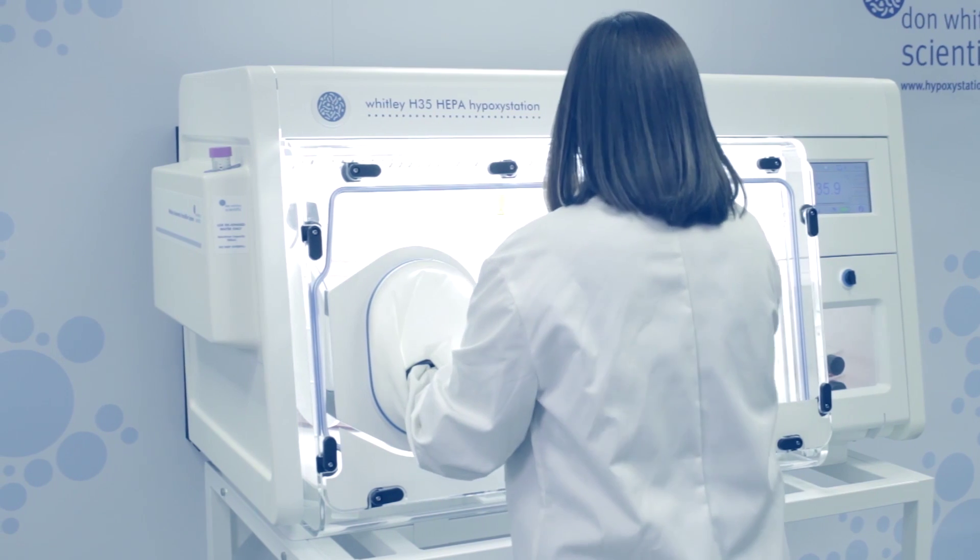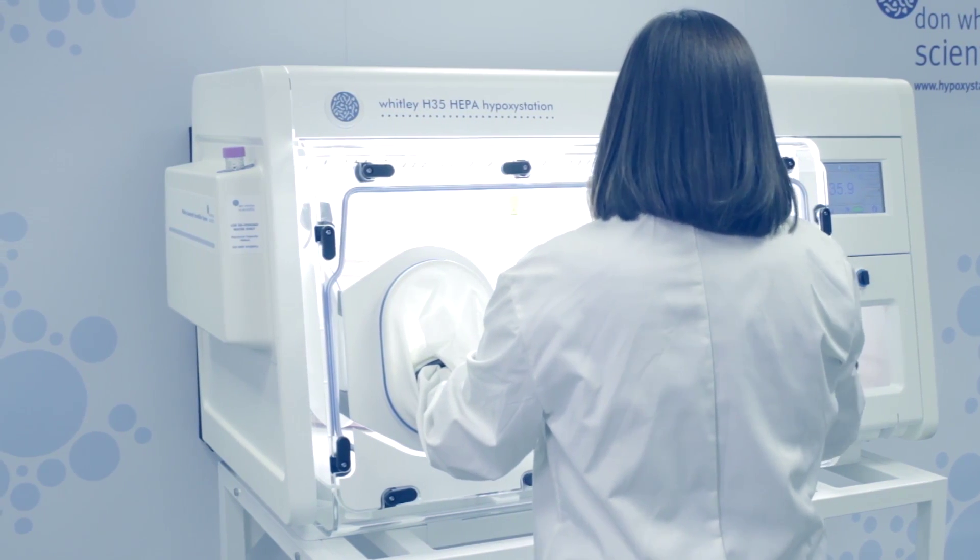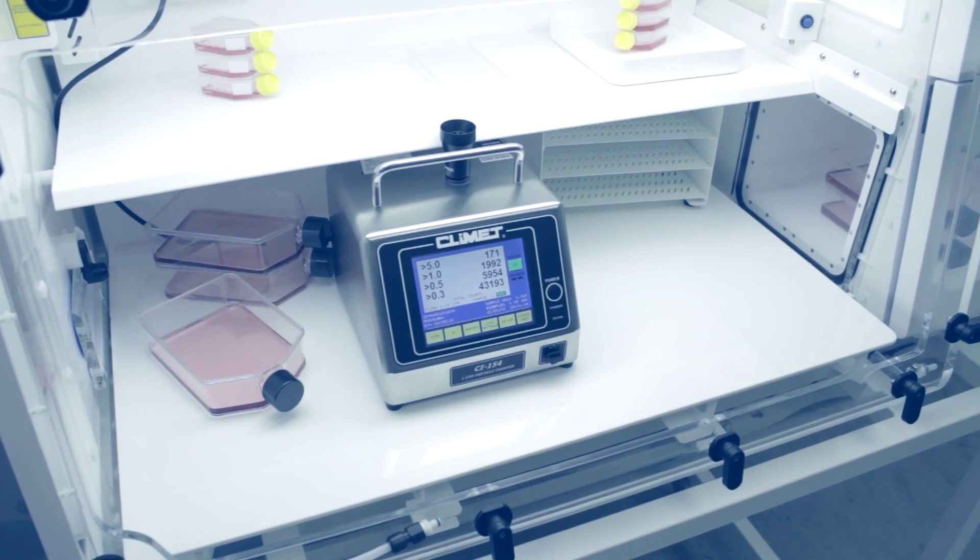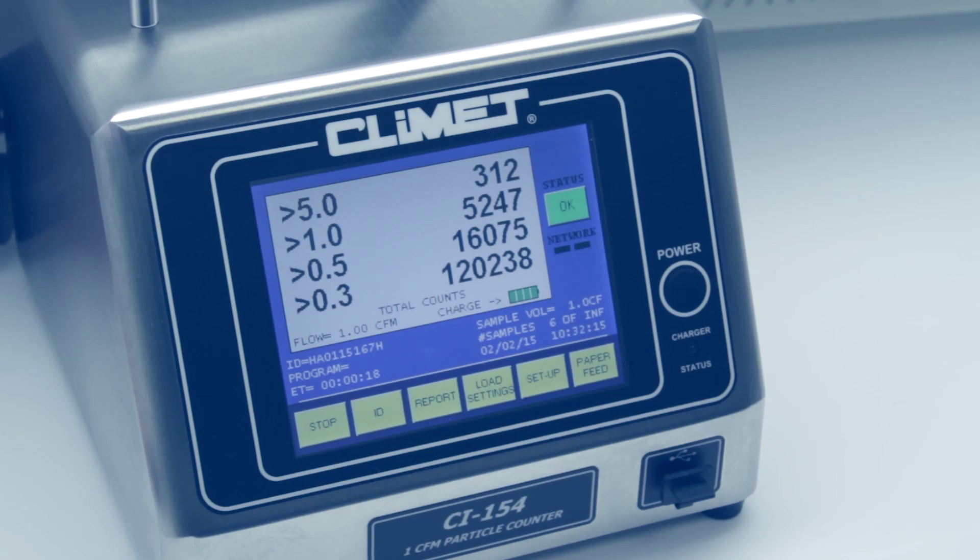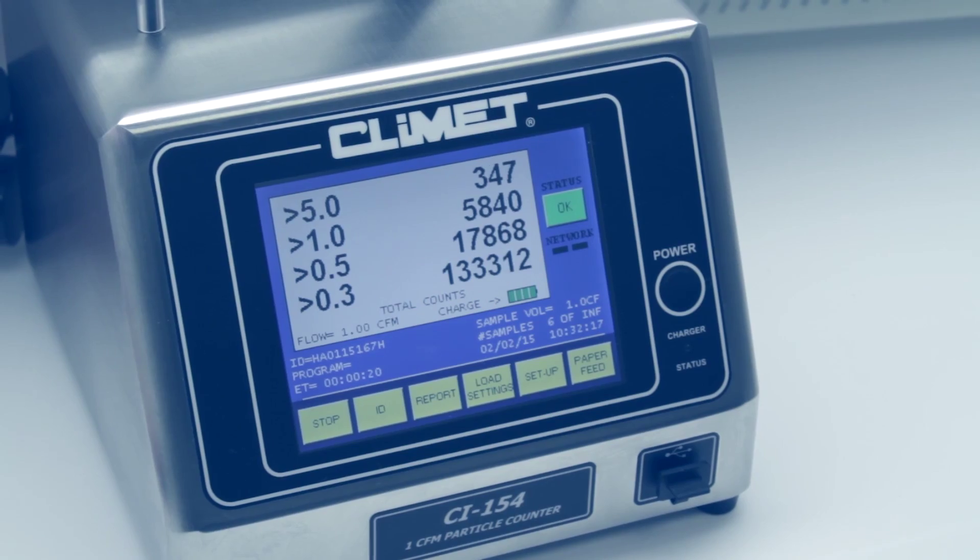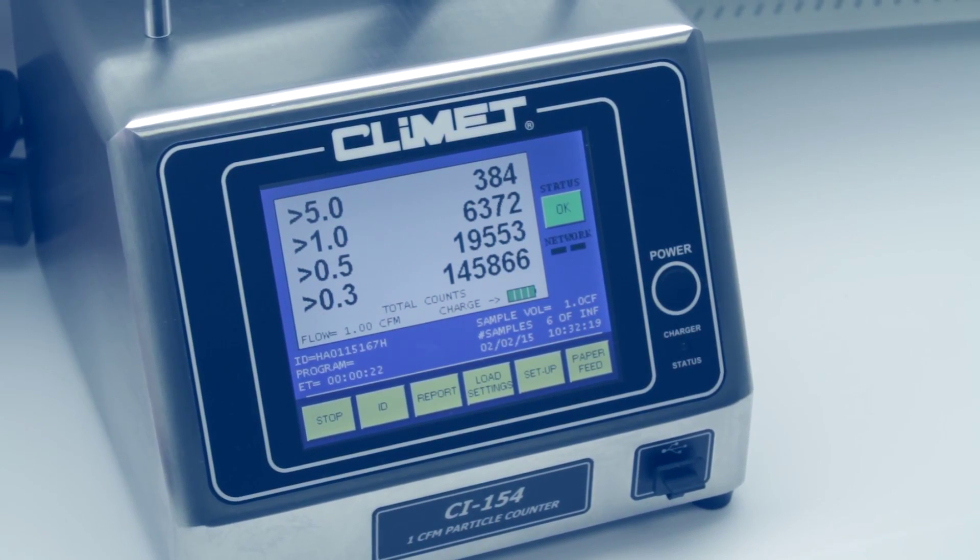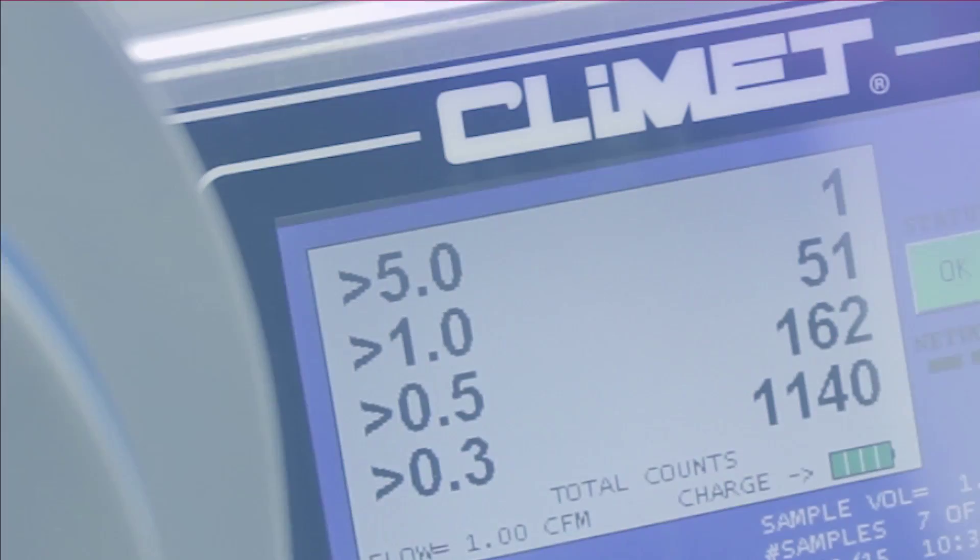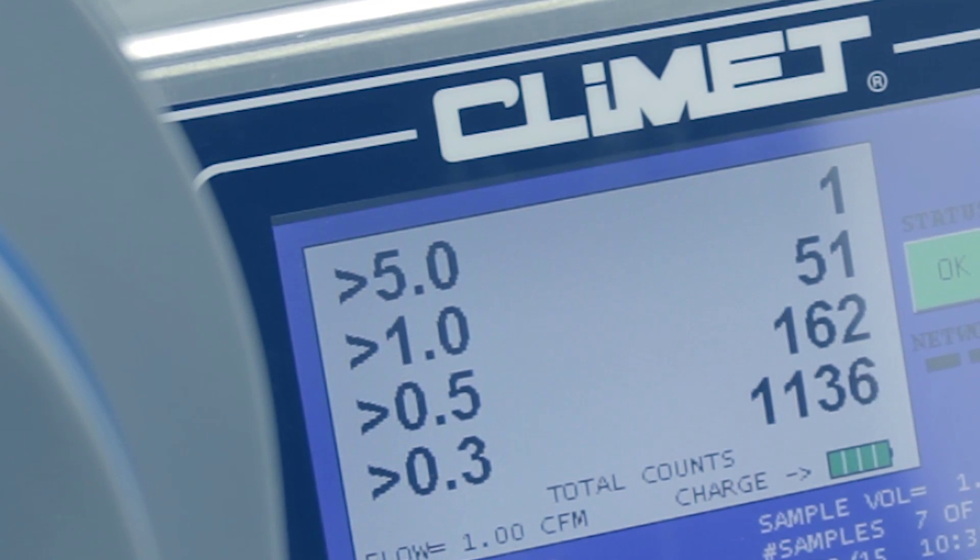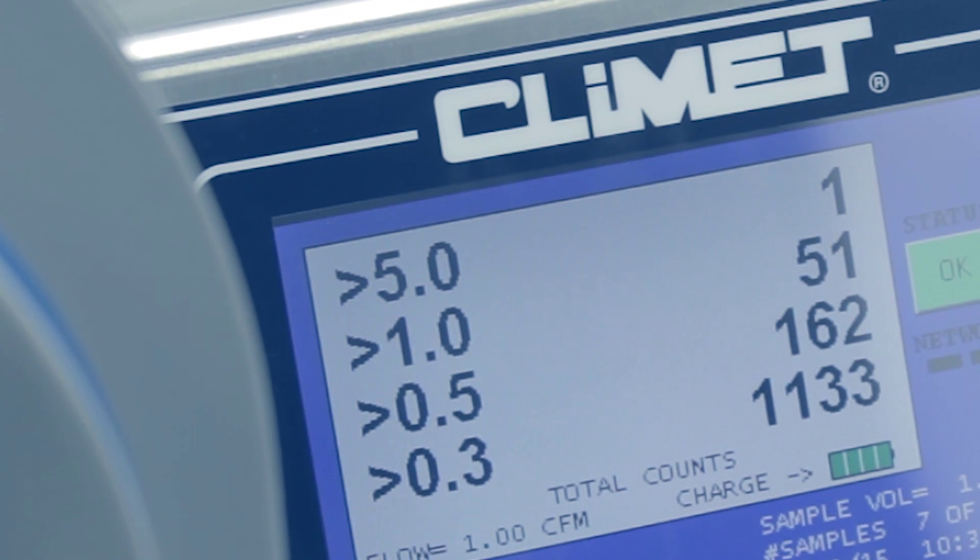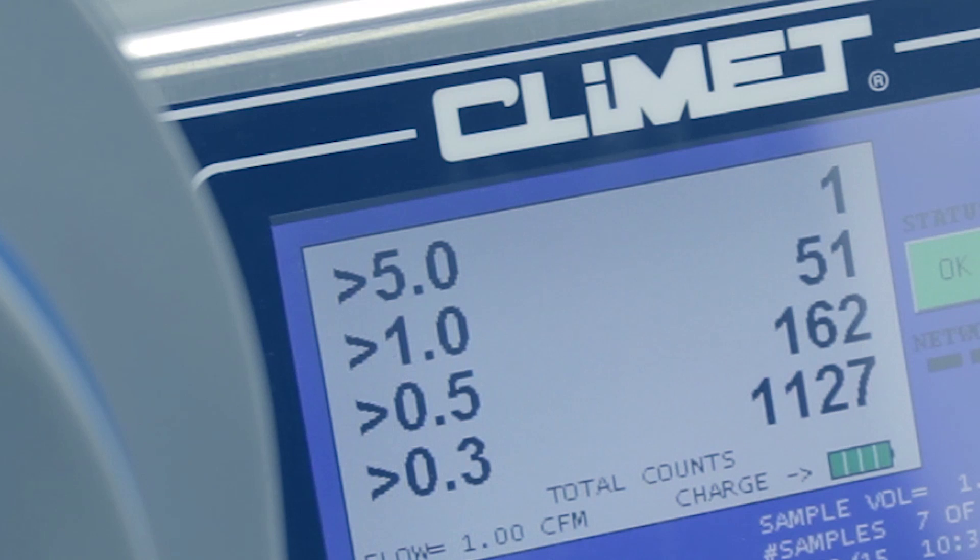One of the scientists in our in-house laboratories has been conducting work in a Whitley H35 hypoxic station. Normal laboratory background levels of particulate are high. Once the workstation is closed up and sealed, after sampling just two cubic feet of atmosphere inside the workstation, observe how low the particulate count has become.